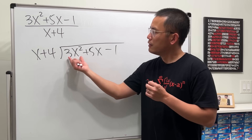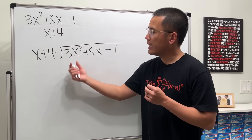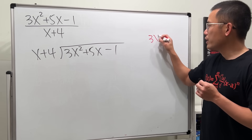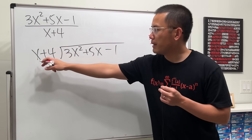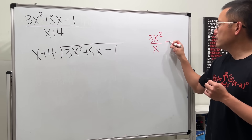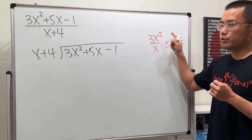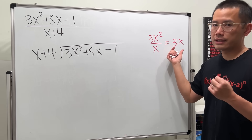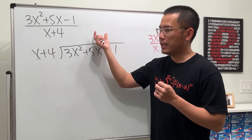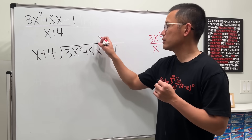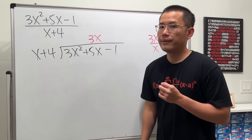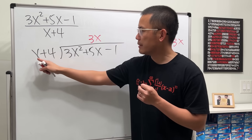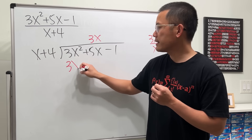Next, take the first term on the inside compared with the first term on the outside. So we have 3x² and divide it by x — that gives us 3x. Line up the 3x with the x terms. Then take 3x times x, which is 3x².